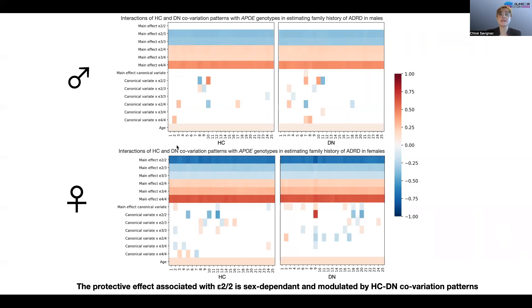So each column on these heatmaps represents a single logistic regression model, and we showed the models in males at the top and for females at the bottom. The first 25 columns show the models for the hippocampus side, and the second set of 25 columns show the models for the default network side. So we can observe a gradient effect in the opposing effect of E2 and E4 that is female specific.